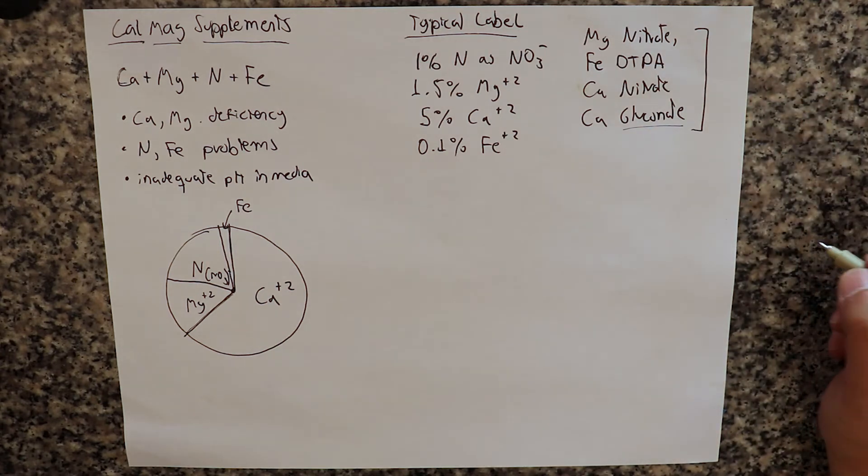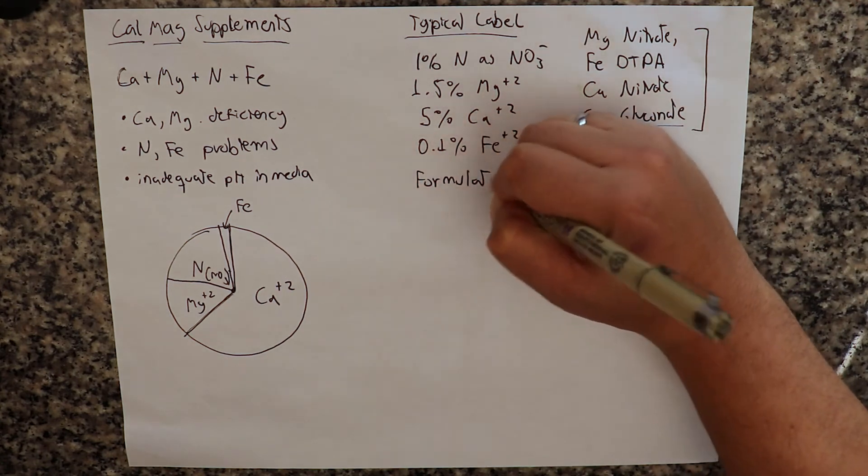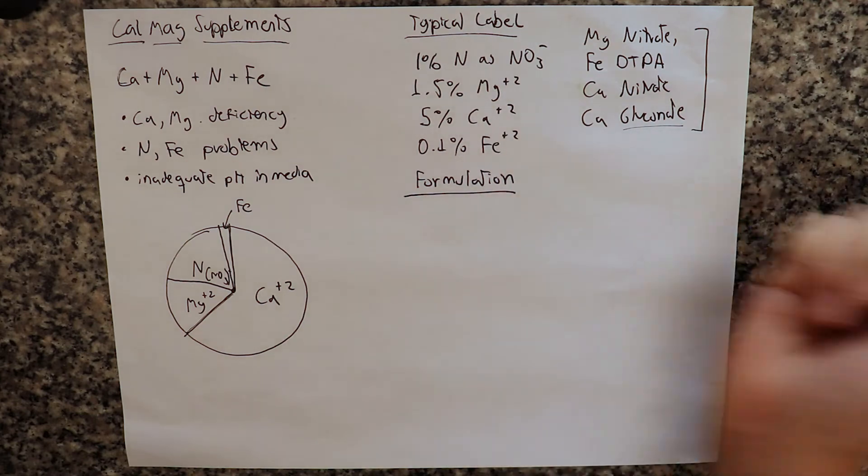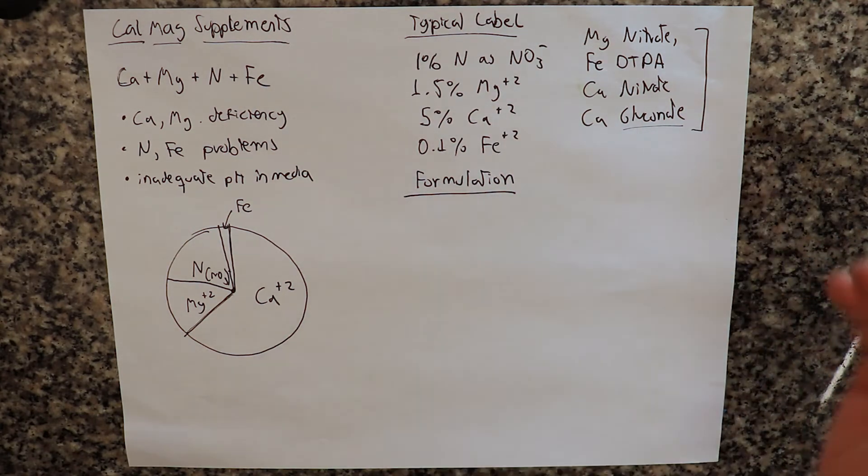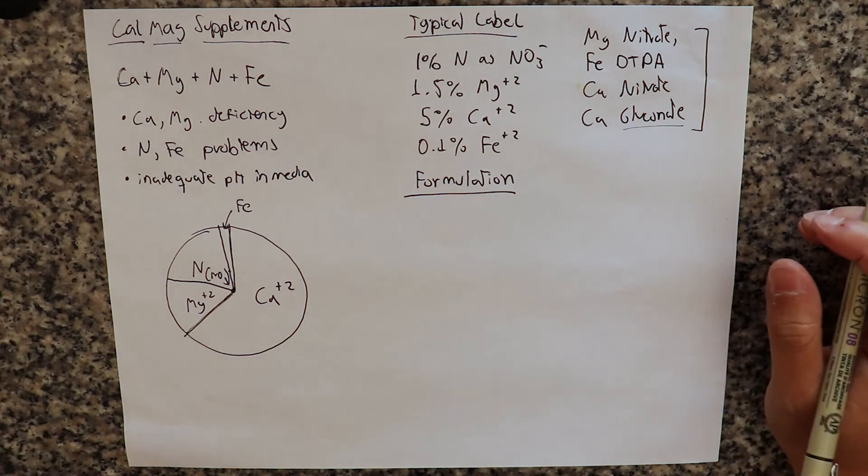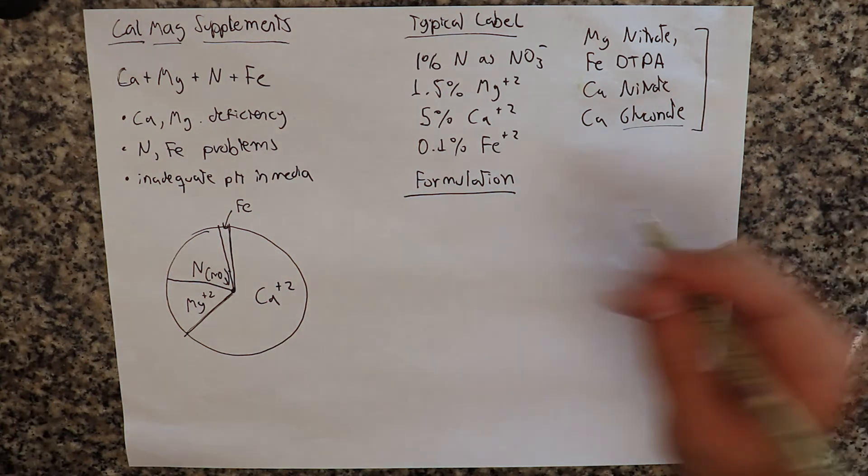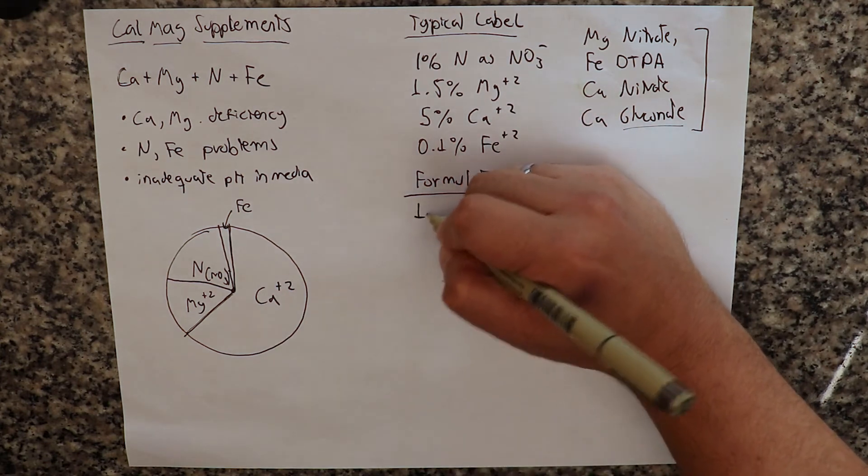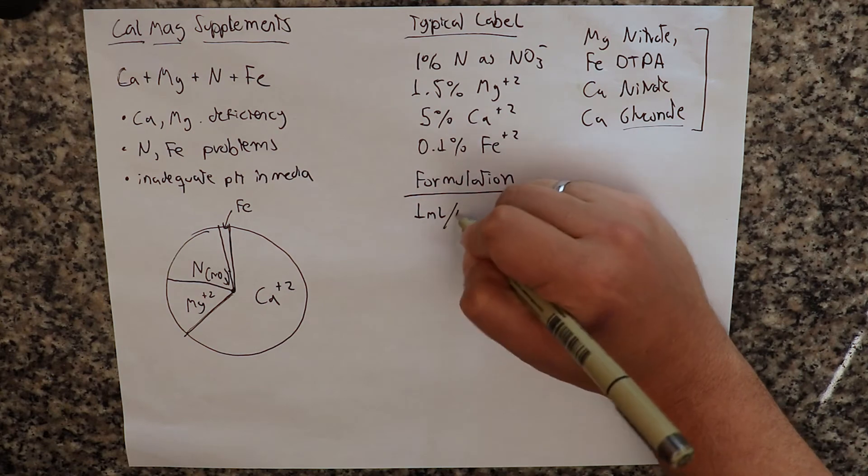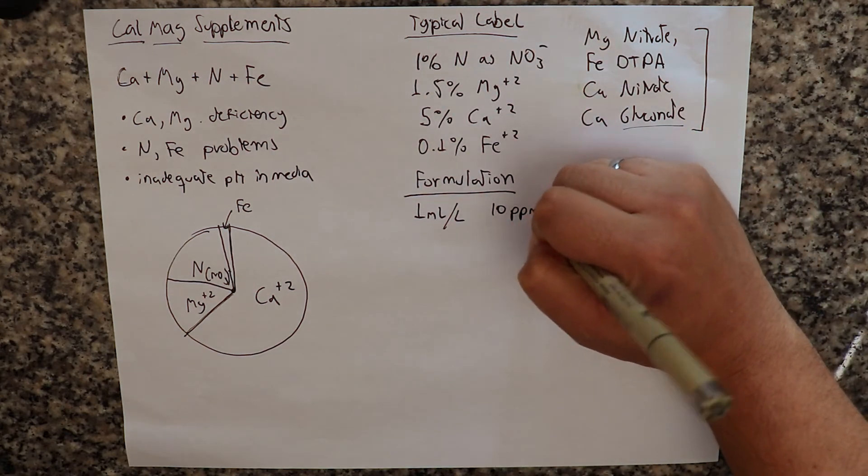Now, I'm going to tell you how you can actually make it. So let's talk about if you were going to do a formulation for a typical CalMag, not necessarily any particular product, but what most of these CalMags would be like. So a CalMag, if you used a CalMag like this, 1 milliliter per liter of a CalMag product with this composition would give you 10 ppm of N.